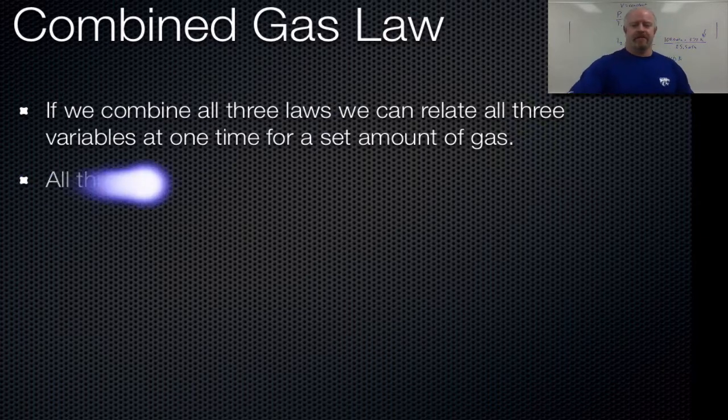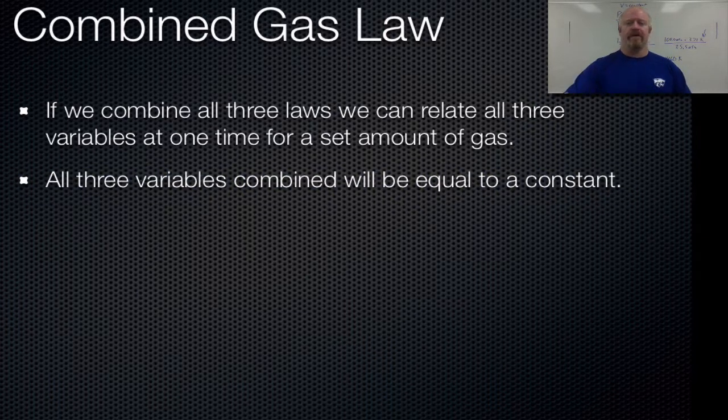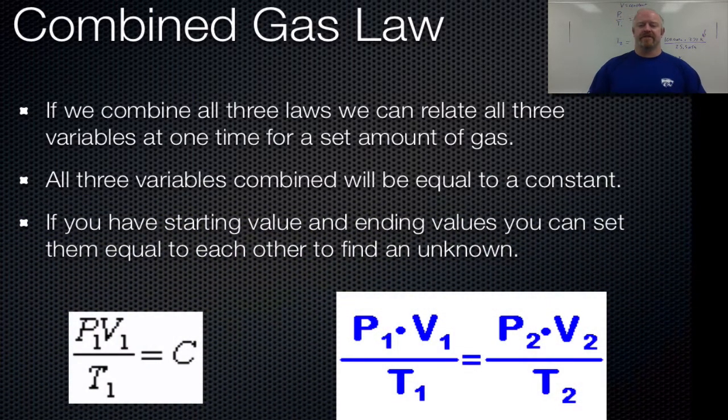So with the combined gas law, we can basically set this up so we can just combine all three of the original laws together, and then solve for one of the variables that we don't have. Now what that means is, in reality, if you take the pressure of a gas times its volume divided by its temperature, that relationship always is a constant. So we call that C for a constant.